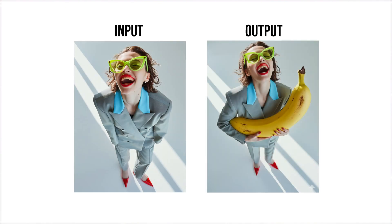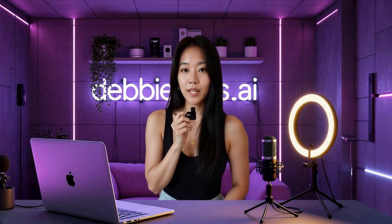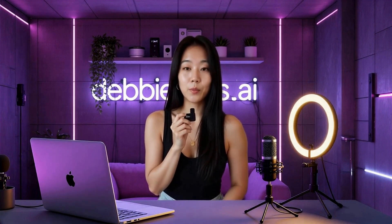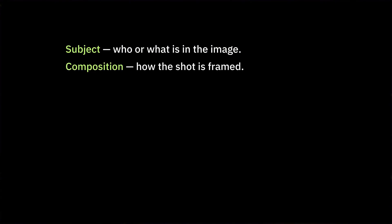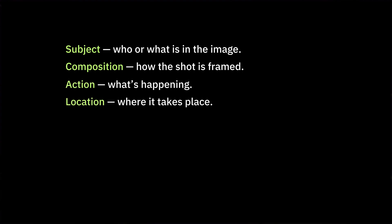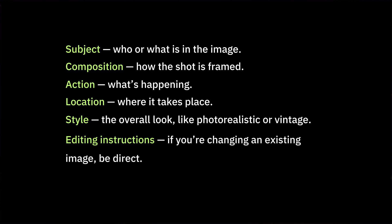So how do you write prompts that always get results like this? Here's a quick hack to level up your prompts — think in six parts: subject (who or what is in the image), composition (how the shot is framed), action (what's happening), location (where it takes place), style (the overall look, like photorealistic or vintage), and editing instructions (if you're changing an existing image, be direct).